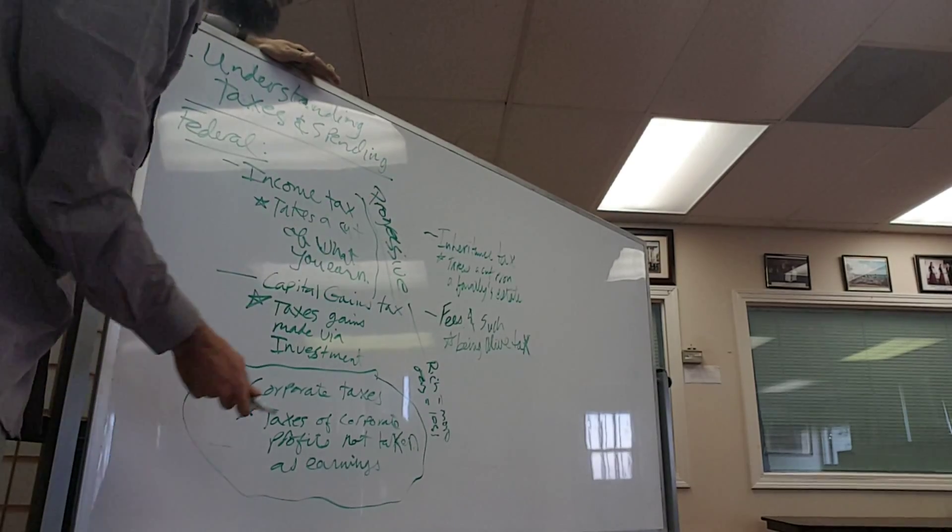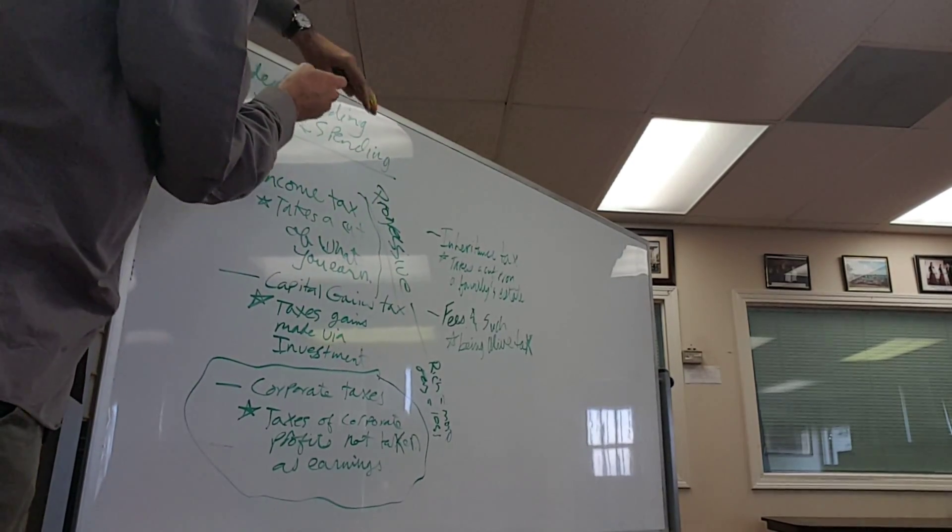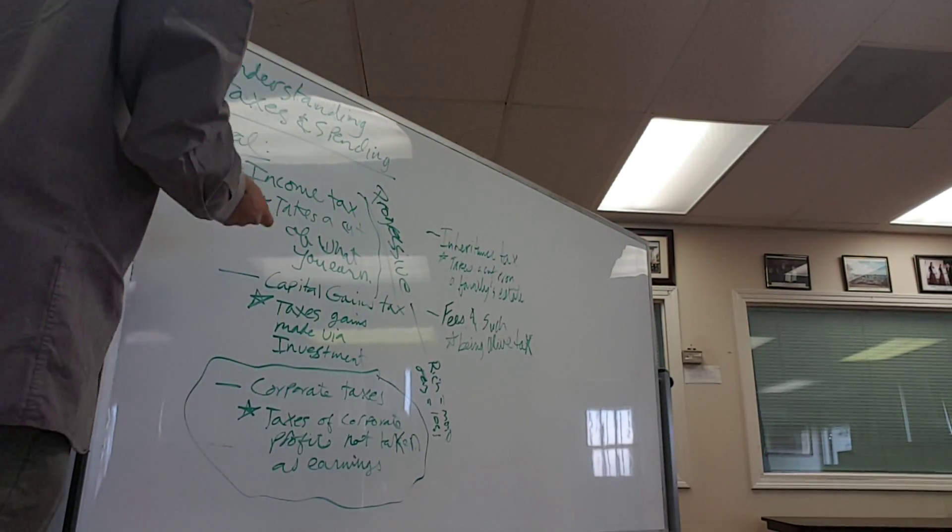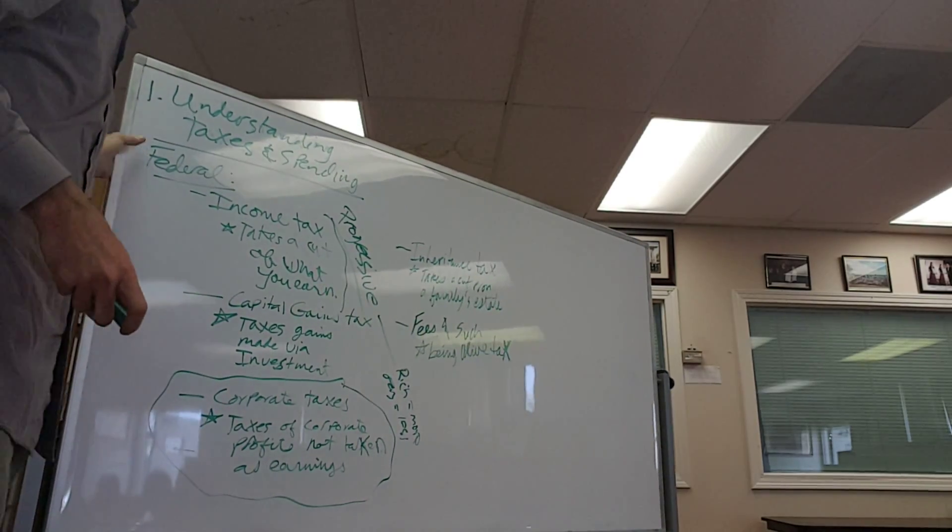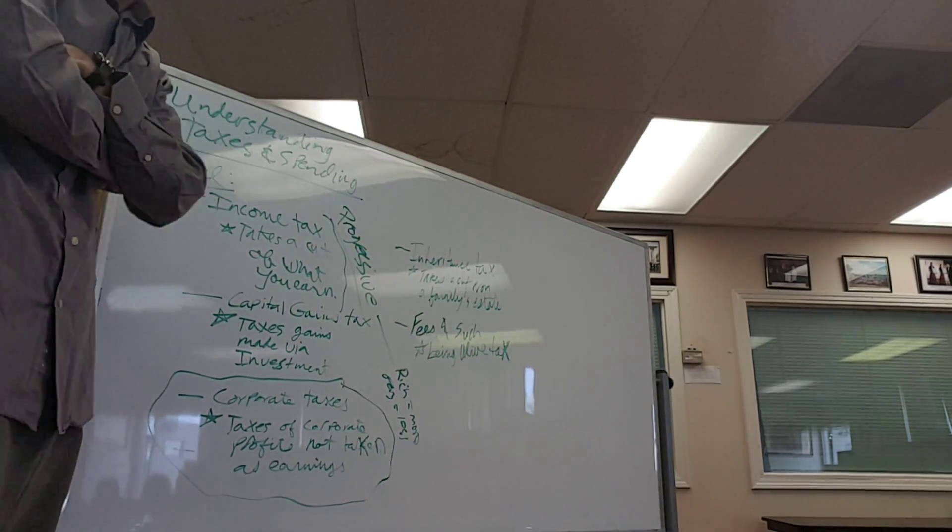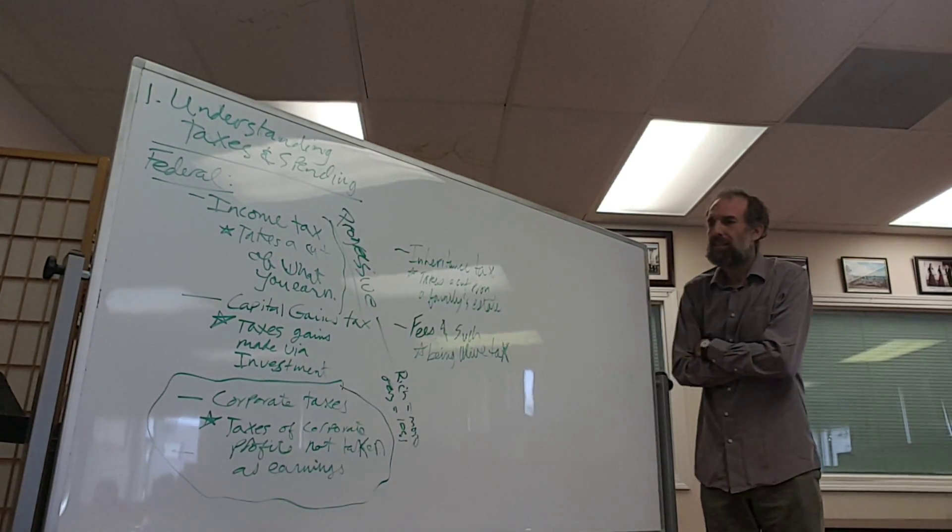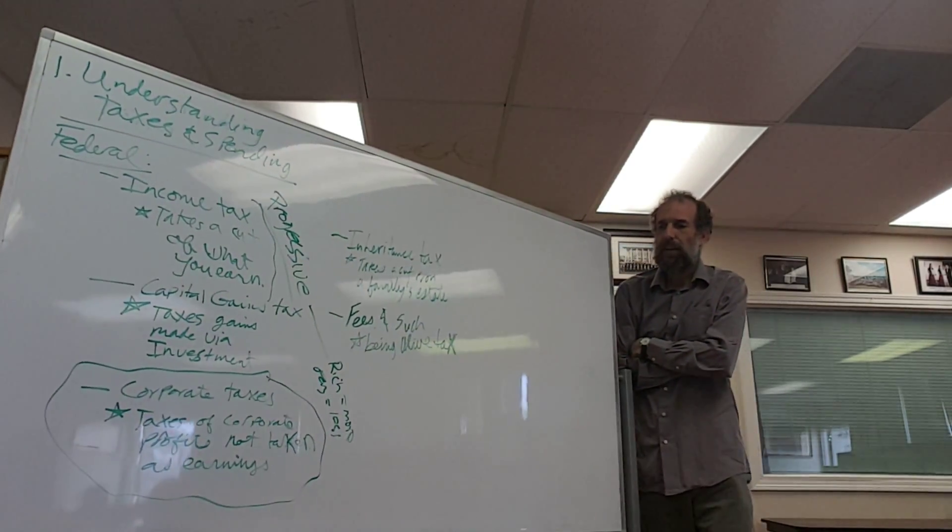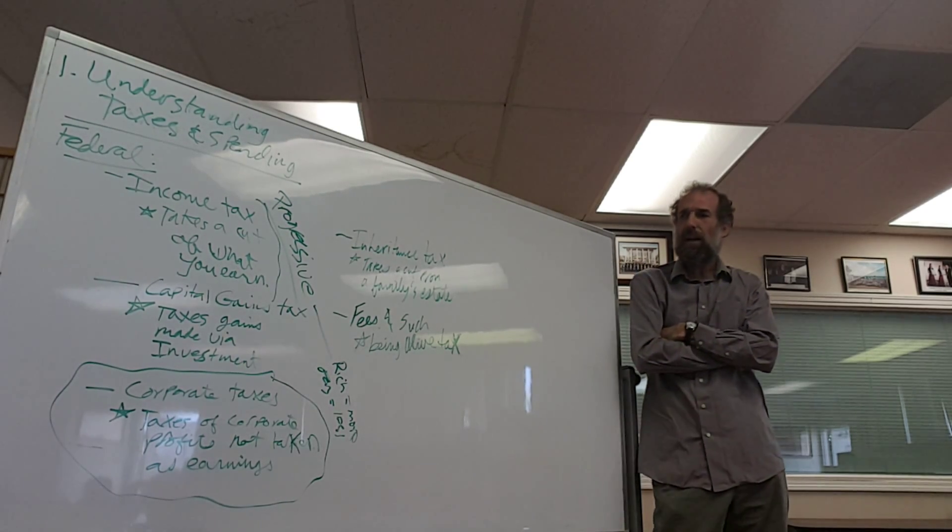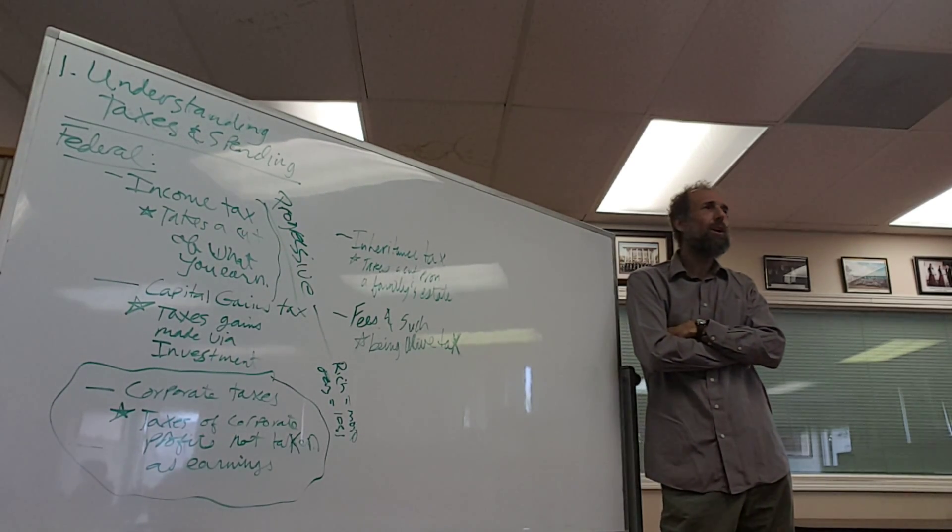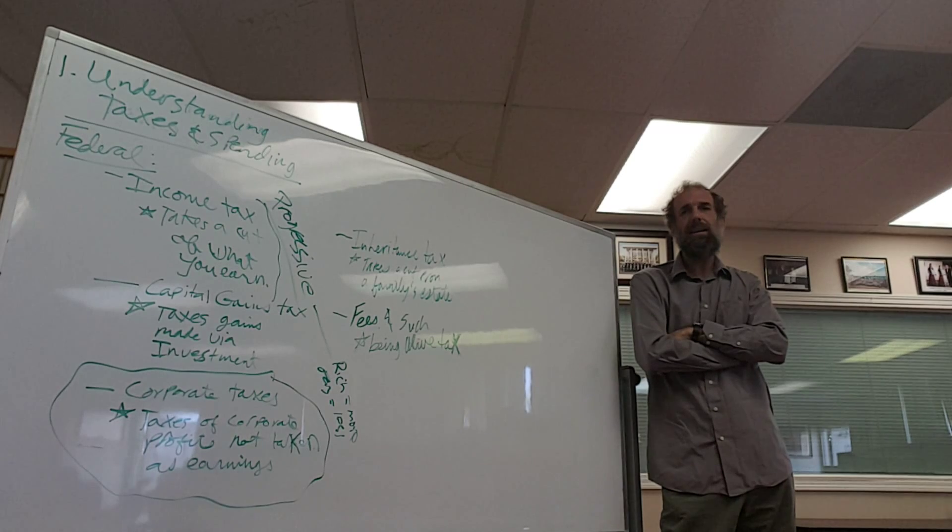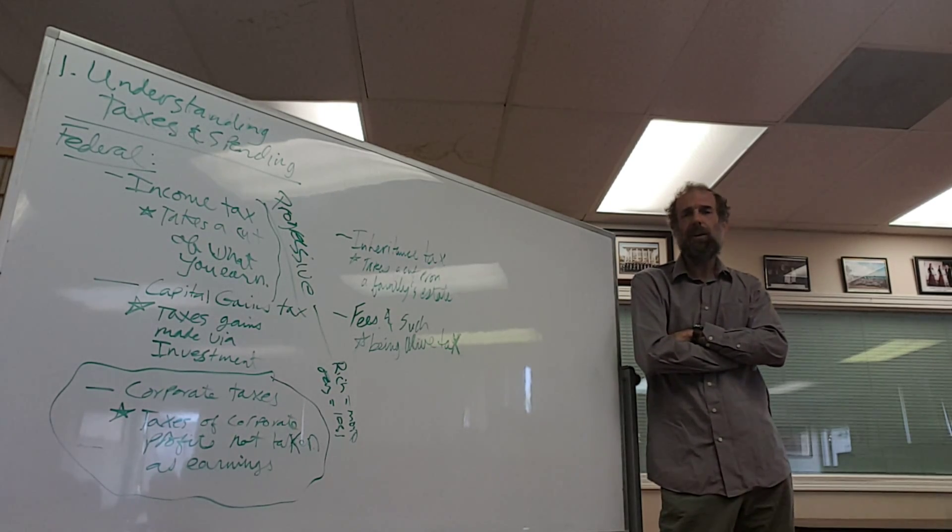Then we have over here inheritance tax, which is the tax that is taken from a family estate upon the transfer of ownership of that estate from one generation to the next. A lot of people think that inheritance tax is the most just kind of tax because it is taking away the money that you didn't earn yourself from you, but that you got as a benefit of being born to your parents.